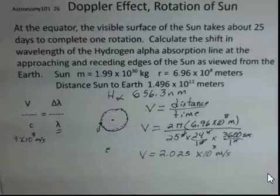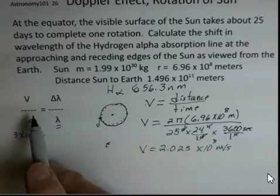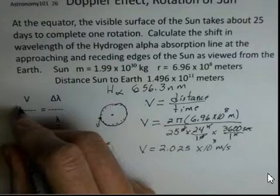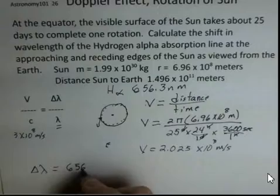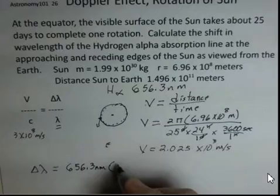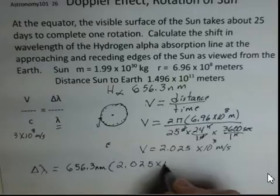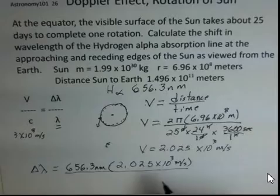So calculating delta lambda, we're going to multiply both sides by lambda. The delta lambda would equal the wavelength times speed divided by the speed of light. So we'll have 656.3 nanometers times the speed that we just obtained, 2.025 times 10 to the third meters per second.